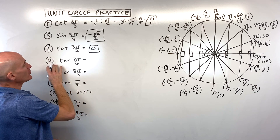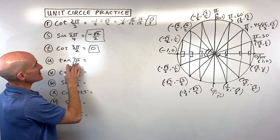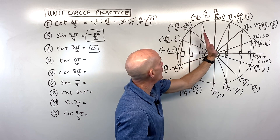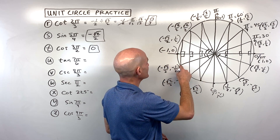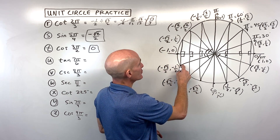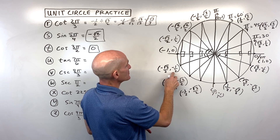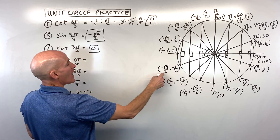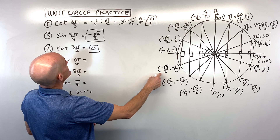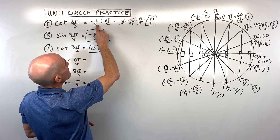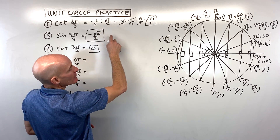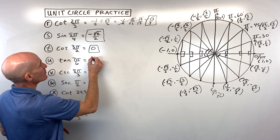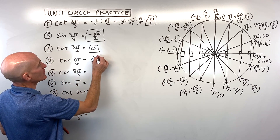Letter U: tangent of 7π/6. Think of this as 1 and 1/6 π — go 1π plus another 1/6 of π (30 degrees), landing in the third quadrant. Tangent is y over x: negative 1/2 divided by negative √3/2. Both are negative so they cancel, and rationalizing gives positive √3/3.